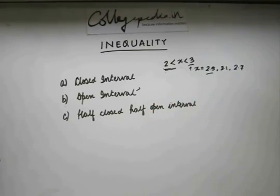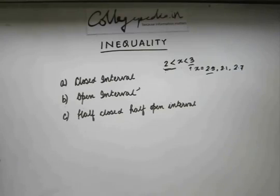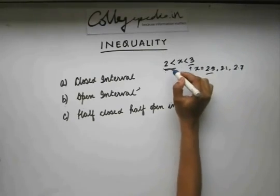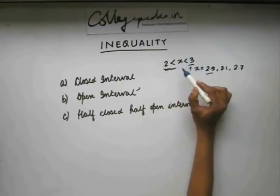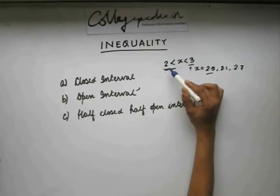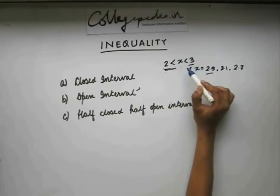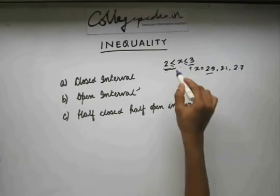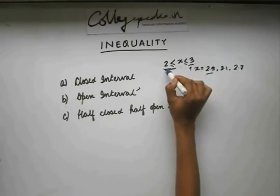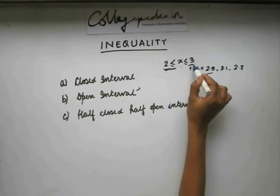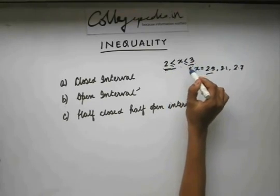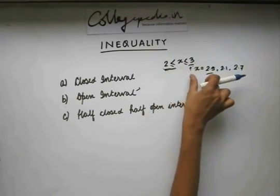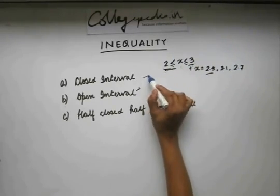Now let's move on to what a closed interval is. When I say closed interval, what I mean is that x can take any value between 2 and 3, including 2 and including 3. So x can take all the values starting from 2 till 3, and the interval is closed at both ends — so it's known as a closed interval.